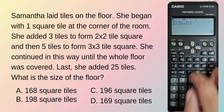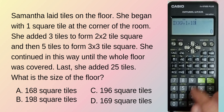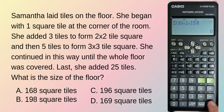The first term is 1 and the 13th is the last term. Getting the summation, the size of the floor is 169 square tiles — letter D.